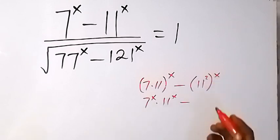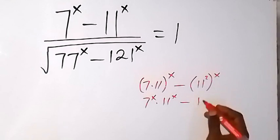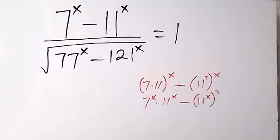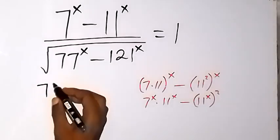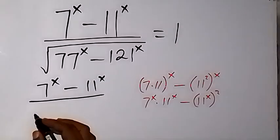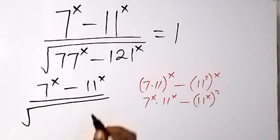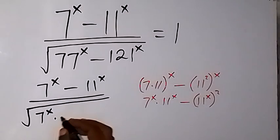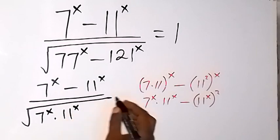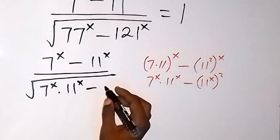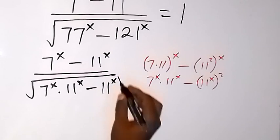Here we can interchange the power — also from the law of indices — we can write 11 raised to power x, then all raised to power 2. So when we apply that, we can rewrite what we are given as 7 raised to power x minus 11 raised to power x, all over root. So we have root of 7 raised to power x times 11 raised to power x, then minus 11 raised to power x, then raised to power 2.